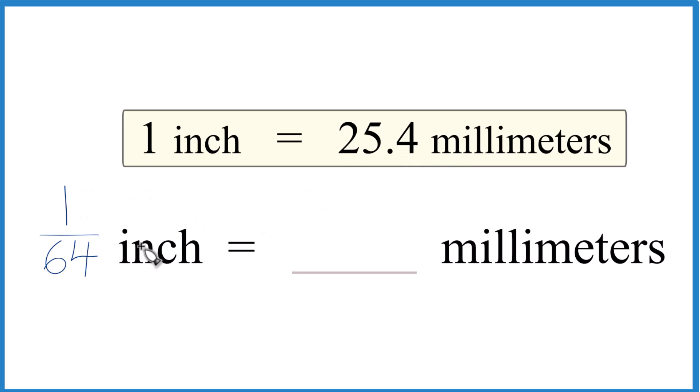So 1/64th of an inch, that's pretty small. That's a lot less than an inch, so it'd be quite a bit less than this number here. So all we have to do when we're converting from inches to millimeters is multiply by 25.4.